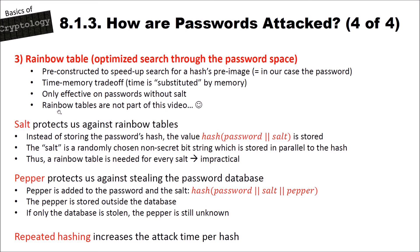Salt protects us against rainbow tables. Instead of storing just the hash of the password, we store the hash of the password concatenated with a salt. The salt is a randomly chosen non-secret bit string stored alongside the hash in the database. When verifying, you take the entered password, append the stored salt, hash the result, and compare it to the stored hash. To attack a salted password with rainbow tables you would need a pre-computed table for every possible salt value, which is impractical.